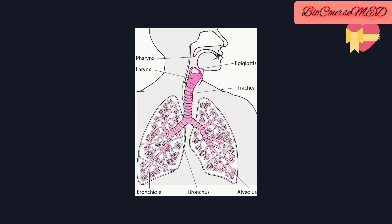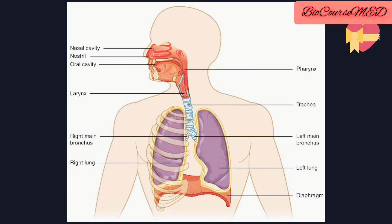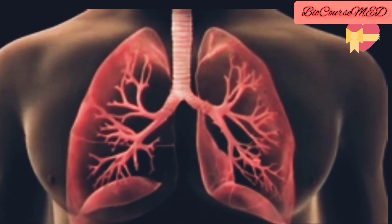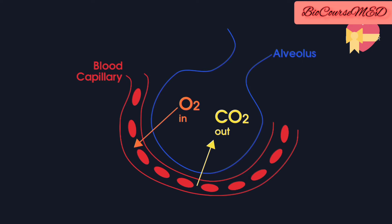Welcome back to Backers Mat. Today we are going to study about the respiratory system. It is a network of organs and tissues that helps you breathe. It includes your airways, lungs, and blood vessels. The muscles that power your lungs are also part of the respiratory system. These parts work together to move oxygen throughout the body and clean out waste gases like carbon dioxide. Overall, the respiratory system is called the gaseous exchange system.